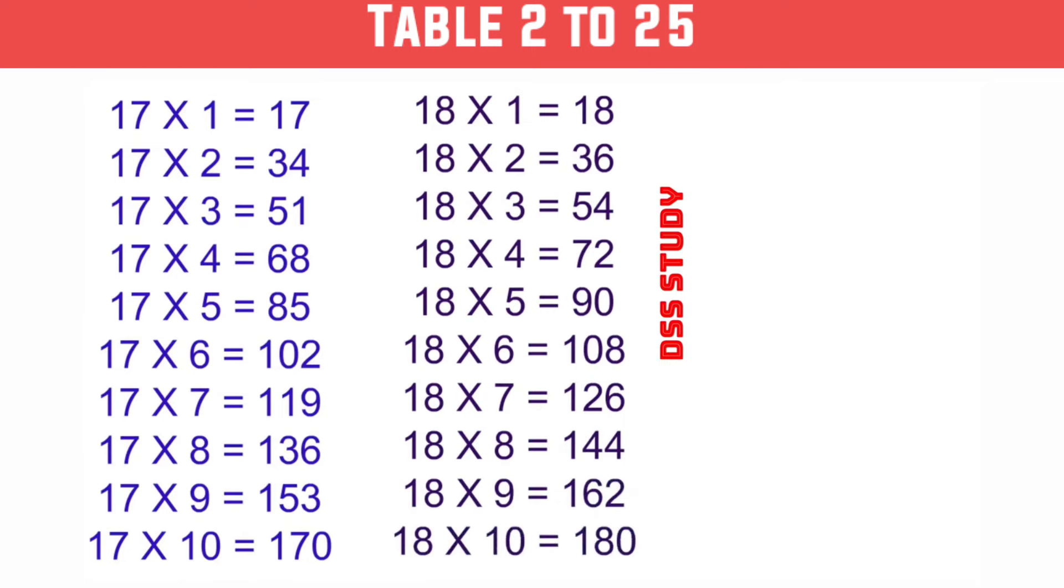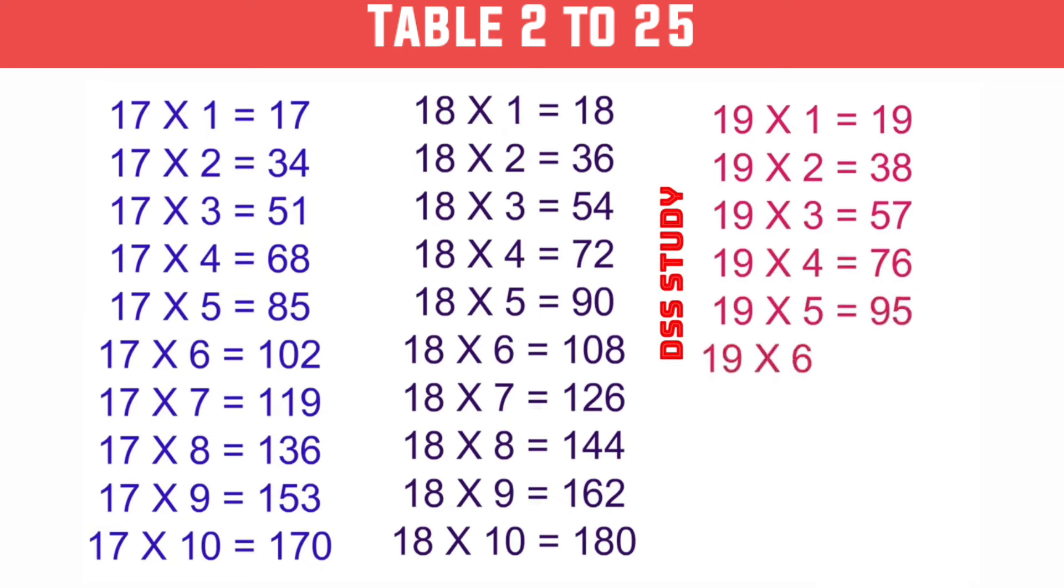19×1 is 19, 19×2 is 38, 19×3 is 57, 19×4 is 76, 19×5 is 95.